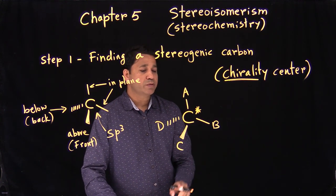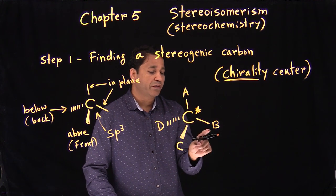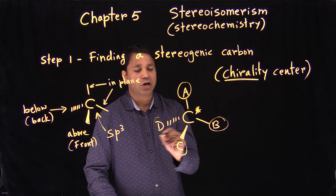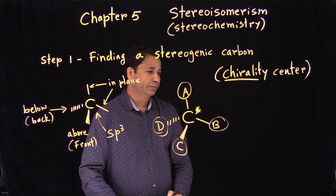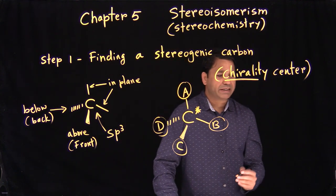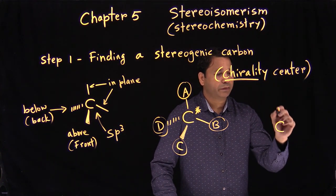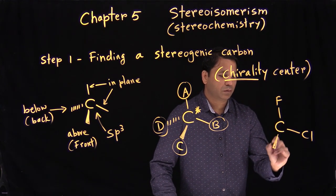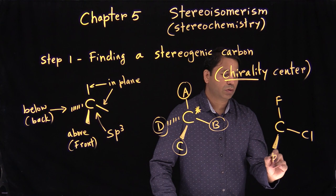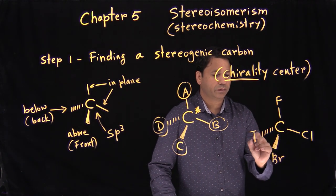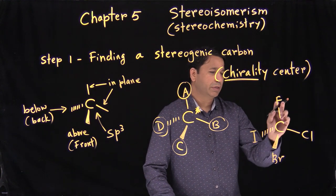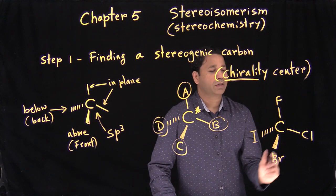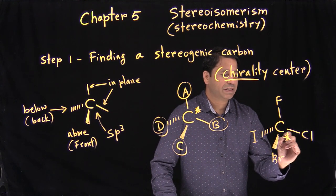A stereogenic carbon is a carbon that has all four different groups attached to it — call them group A, B, C, and D. For example, if a carbon has fluorine, chlorine, bromine, and iodine attached to it, all four groups are different, so that carbon is stereogenic.